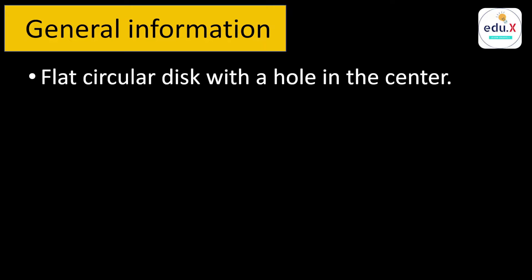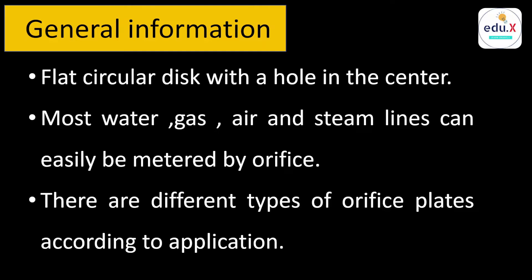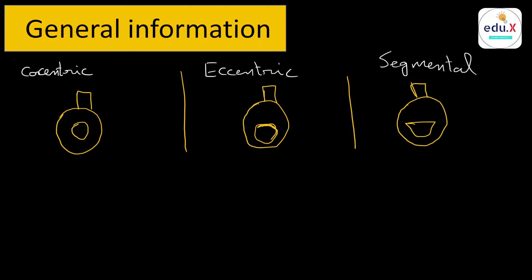Most water, gas, air, and steam lines can easily be metered by orifice plates. There are different types of orifice plates depending on the application. The most common is the concentric type, where the hole is in the center. The second type is eccentric, where the hole can be at the bottom or top of the plate. The last type is segmental, where a semicircular hole is built into the bottom of the plate.